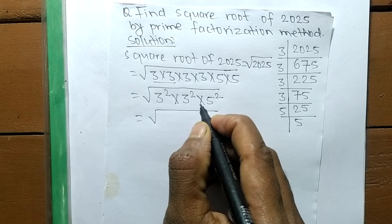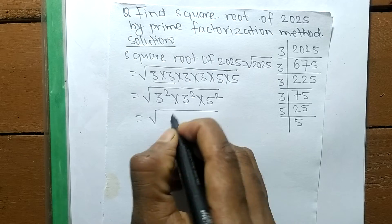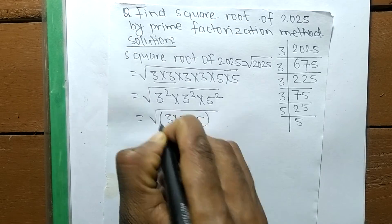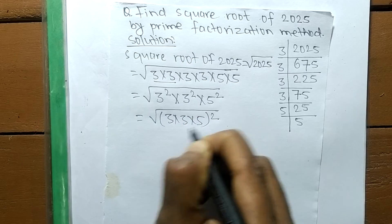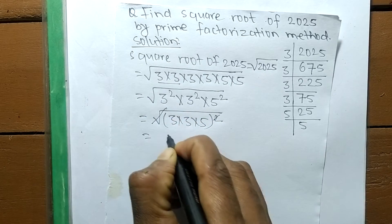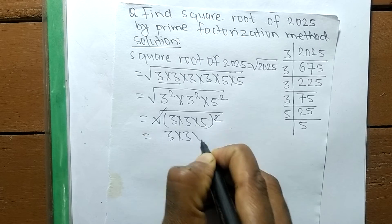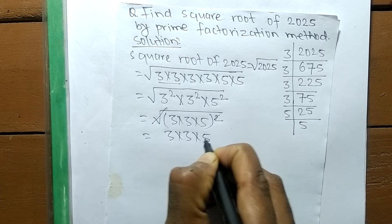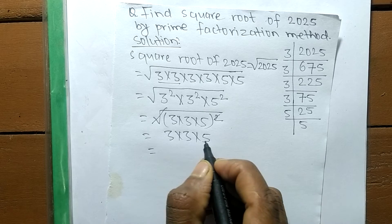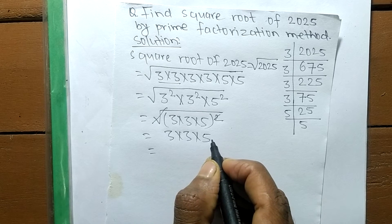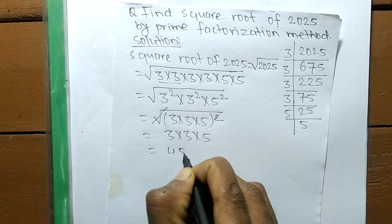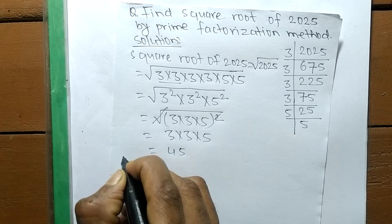We group all numbers that form a square as a common whole square. A square and a square root cancel each other, so 3 times 3 times 5 comes out of the square root. The product of all these numbers is 3 times 3 equals 9, times 5, which equals 45.